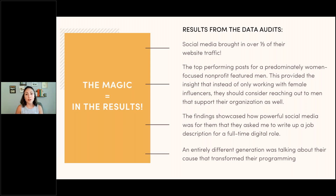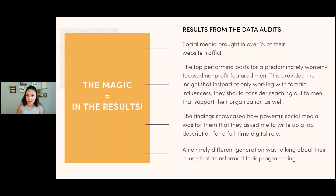These are results from data audits I've done with clients. One client found that social media brought in over a third of their website traffic and specifically which channels — so they knew what to focus on. Another was a predominantly female organization working with female survivors of human trafficking. Their top performing posts ironically featured men — specifically men supporting women in the cause. They'd always worked with women influencers and realized they should also work with men in this space to raise awareness.